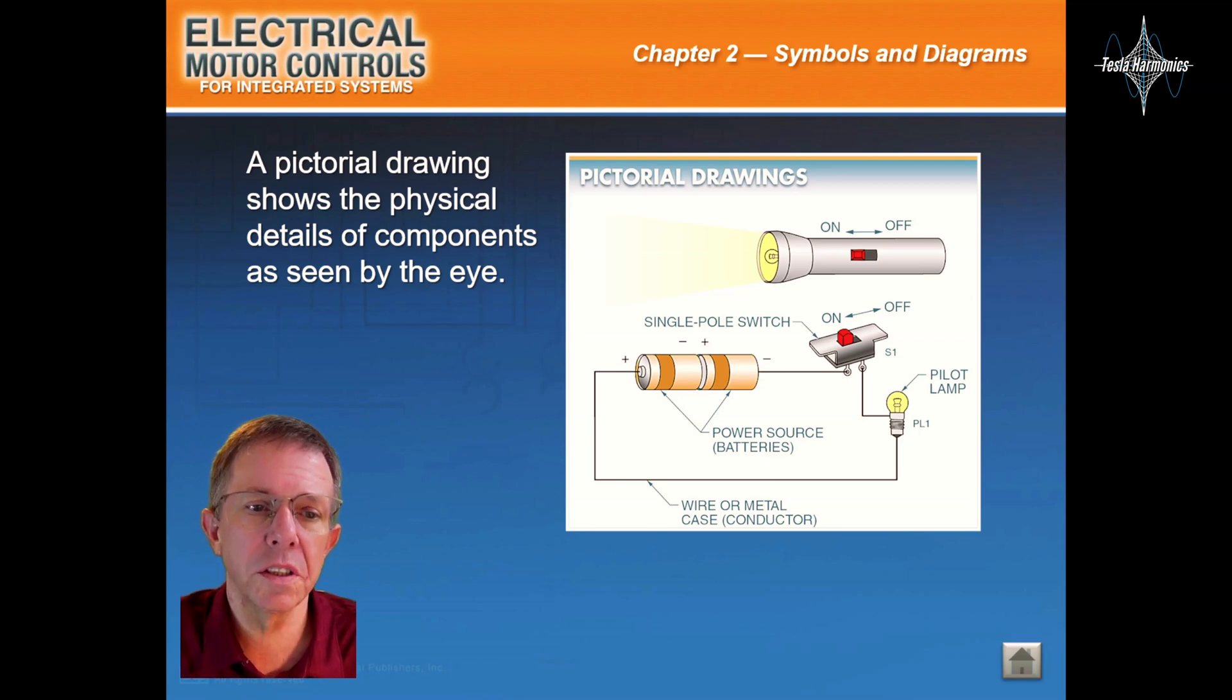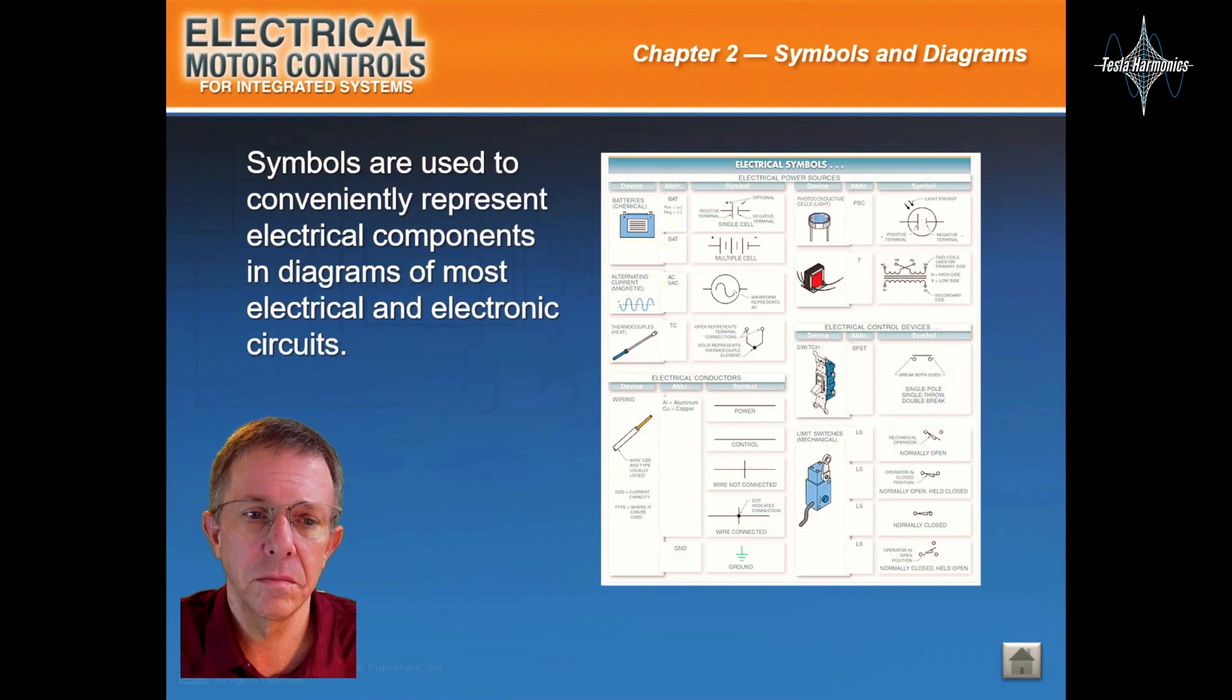A pictorial drawing shows the physical details of components as seen by the eye. Symbols are used to conveniently represent electrical components in diagrams of most electrical and electronic circuits.